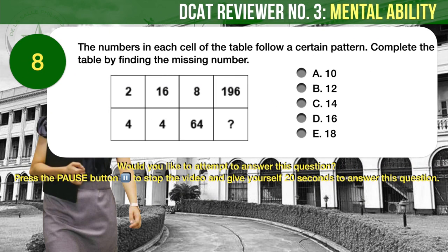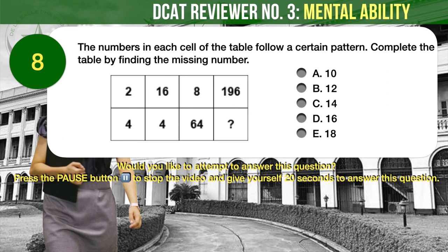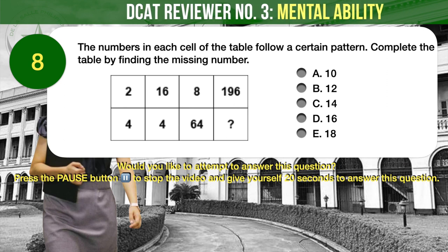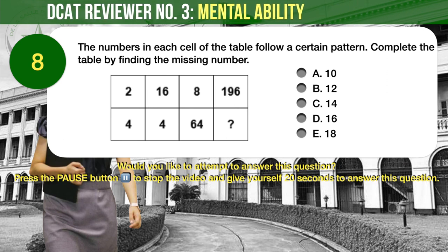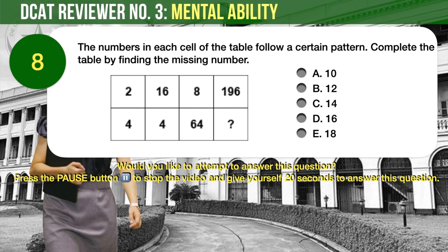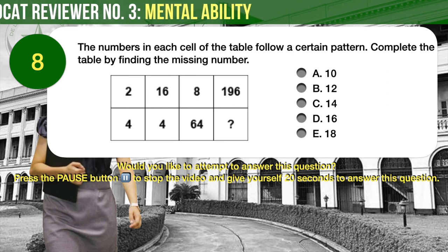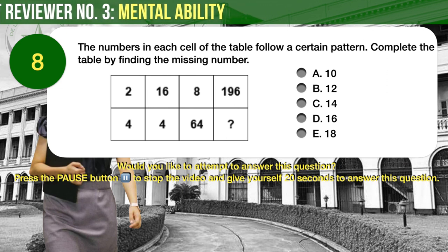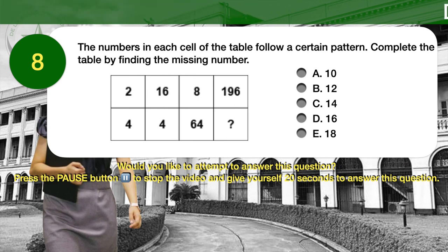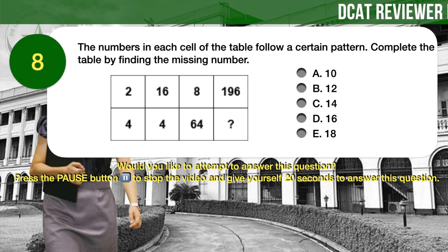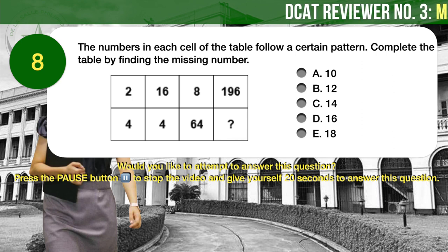Question number 8. The numbers in each cell of the table follow a certain pattern. Complete the table by finding the missing number. A: 10. B: 12. C: 14. D: 16. E: 18.